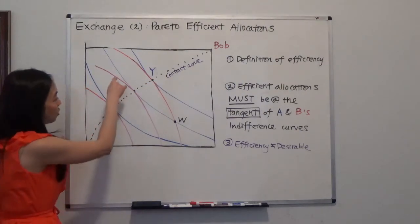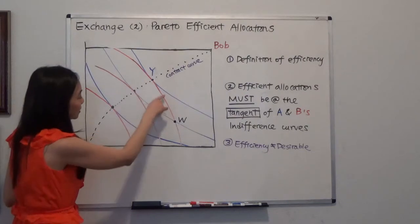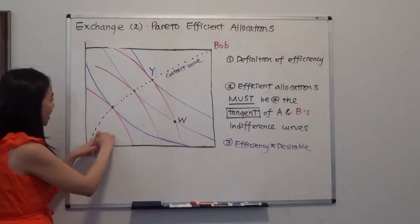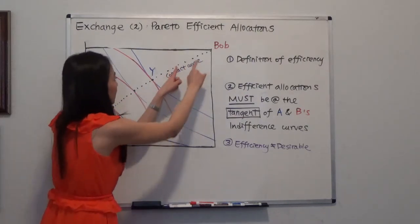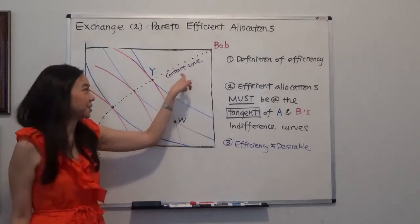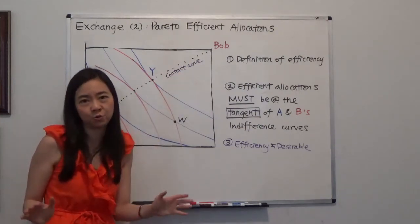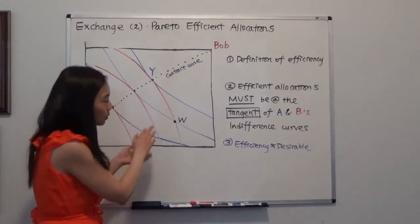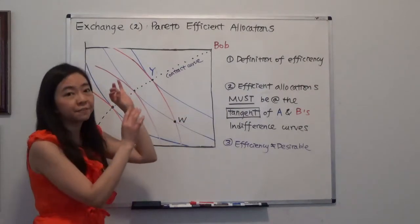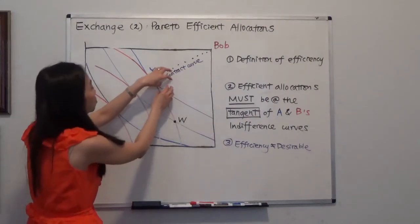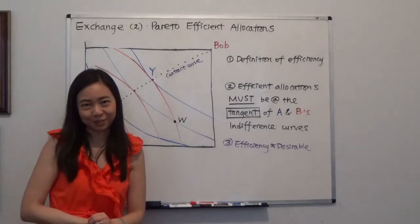In fact, you find all the tangent of the indifference curves, and then you connect them, you will get the contract curve. The contract curve tells you how the final contract will look like. So suppose there is initial endowment, eventually we will be moving toward the contract curve for the outcome to be efficient.